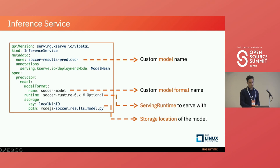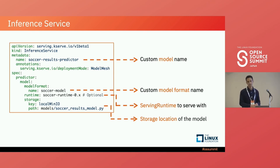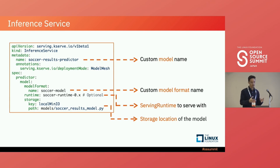Lastly, we have our pointer to the model itself. In this case I'm using a local MinIO instance. When you deploy Model Mesh and use the quick start version from their documentation, it actually comes with a local MinIO storage with a ton of example models. I went into that storage and added my model there as well.